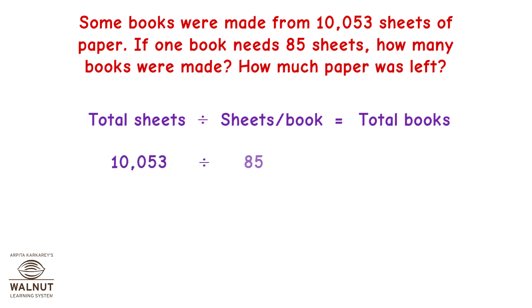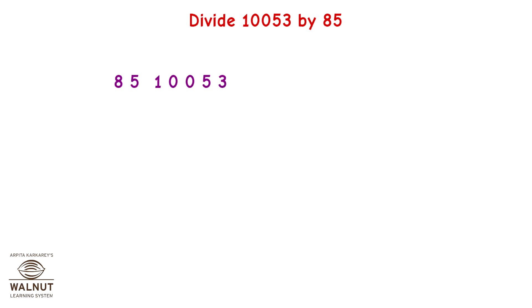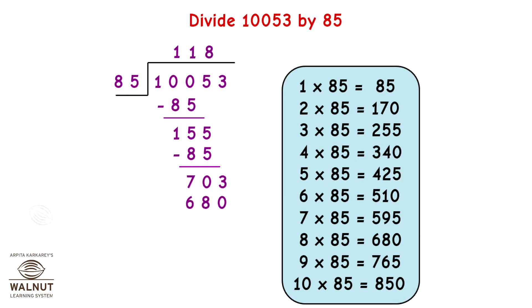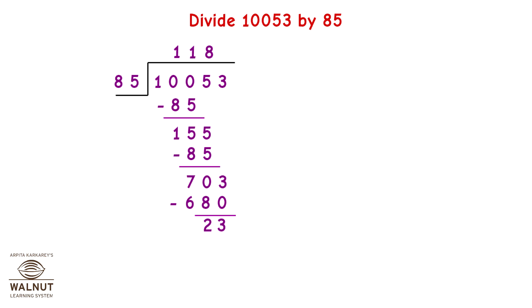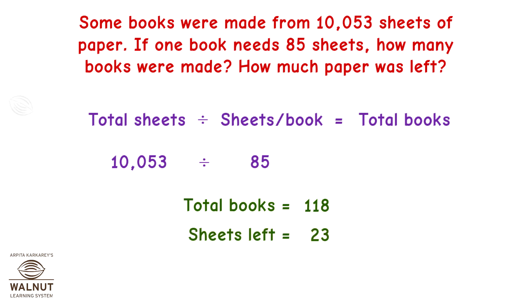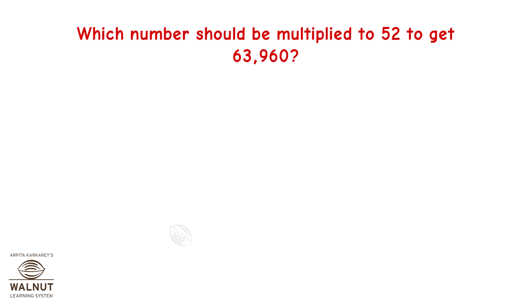Now let us do the long division. We write the table of 85, then we start dividing. The quotient is the number of books that were made and the remainder is the sheets left over. So the books made are 118, which is the quotient, and the sheets left are 23, which is the remainder.